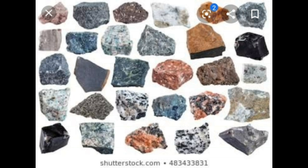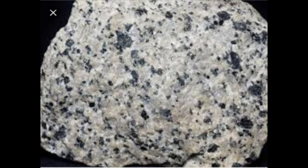Plutonic rocks, also known as intrusive rocks, are formed when magma trapped between layers of rocks deep inside the earth cools. They are coarse grained rocks. Examples of plutonic rocks include granite and diorite.